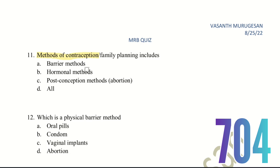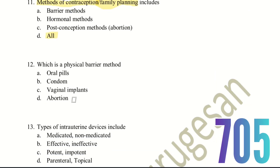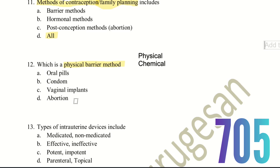Barrier methods are available, hormonal methods are available, and post-conception methods such as abortion are also included. The right answer is option D — all. Twelfth question: which is a physical barrier method? The choices are oral pills, condom, vaginal implants, or abortion. The answer is option B — condom. This is one example of a physical barrier method.